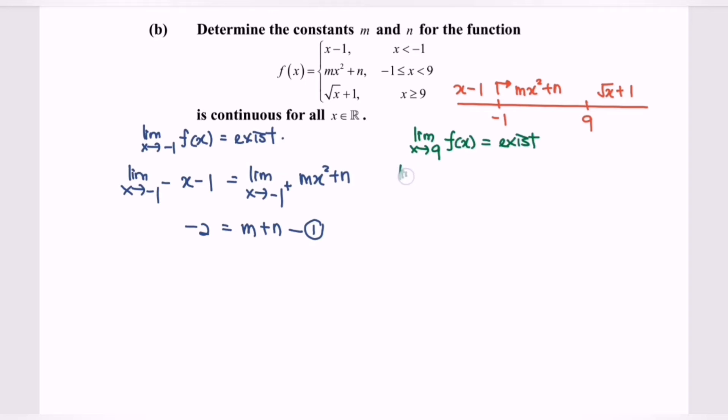The limit when x approaching 9 from the left and the function will be mx² + n, which is equal to the limit when x approaching 9 from the right, and the function will be square root of x plus 1.